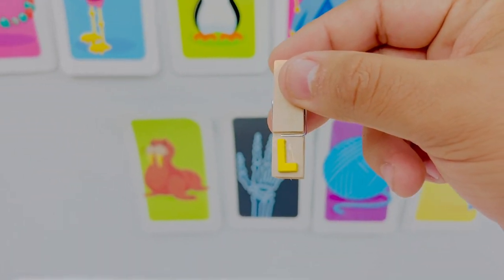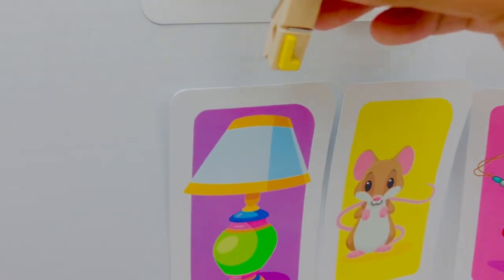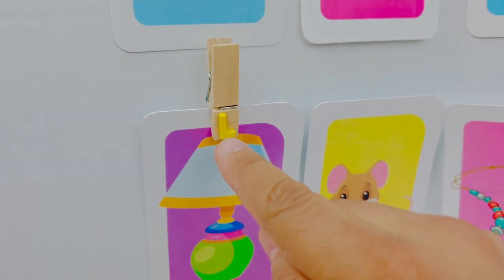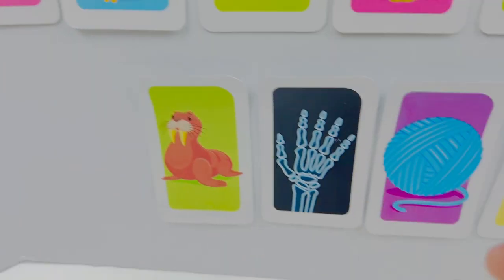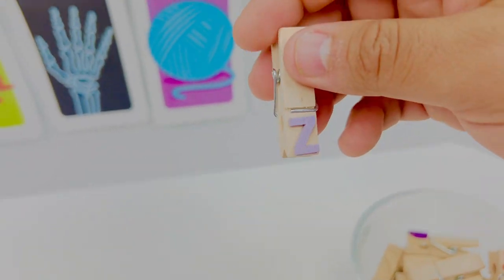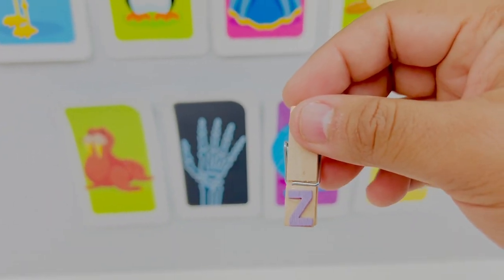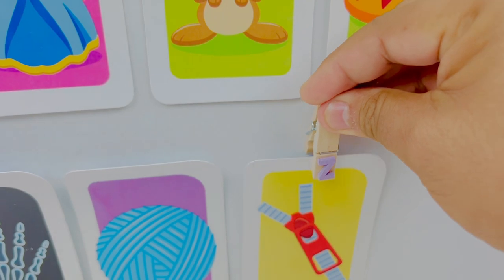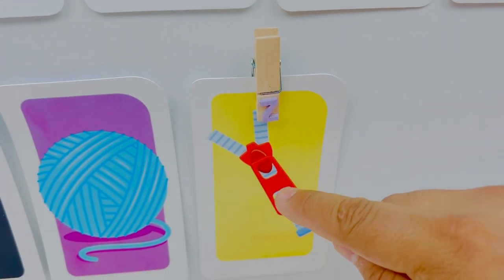This is letter L. Letter L is for lamp. L lamp. This is letter Z. Z is for zipper. Z zipper.